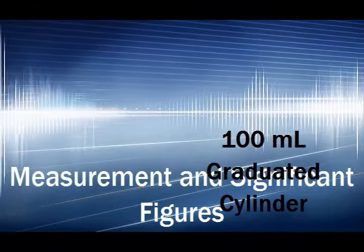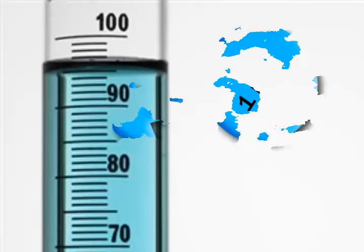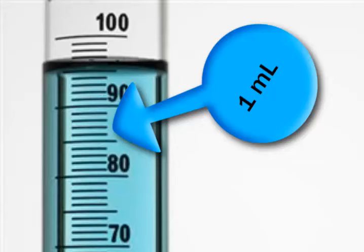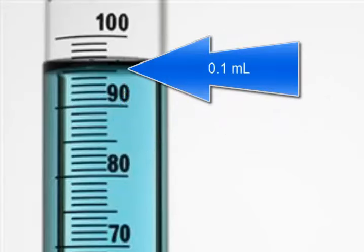Welcome to measurement and significant figures video. If we have a hundred milliliter graduated cylinder and it is marked off every one milliliter, we can estimate to the one-tenth of a milliliter, which means estimating ten small divisions between each mark.